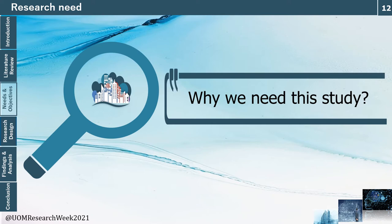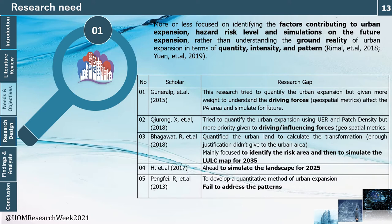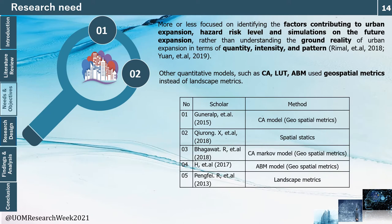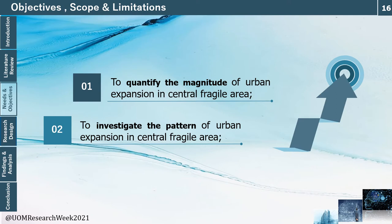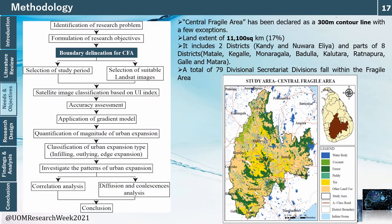Considering all these facts, landscape metrics were selected for this study. To justify the research need, five samples from international empirical studies on fragile or sensitive areas were examined. Most studies on fragile areas focus on finding factors contributing to urban expansion, hazard risk levels, and future simulations using geospatial metrics — which have the drawbacks already described. Additionally, no research has addressed urban expansion specifically for the Central Fragile Area in the Sri Lankan context. The research therefore aims to achieve two objectives: to quantify the magnitude and to investigate the pattern of urban expansion in the Central Fragile Area.